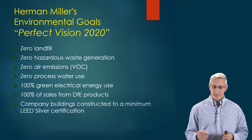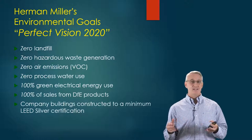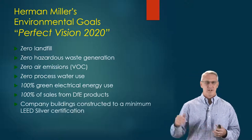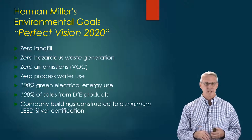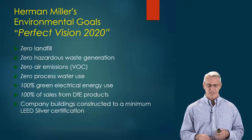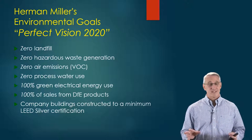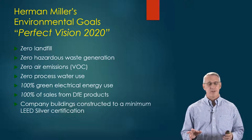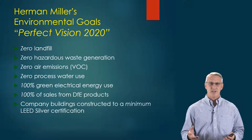Also, the company buildings were going to be constructed with a minimum LEED Silver certification, which is next to the Gold or Platinum certification you can get. So they had some pretty big goals for what they wanted to do. Let's see what processes they did with their existing product lines — specifically the Herman Miller chair — on how they went about this.